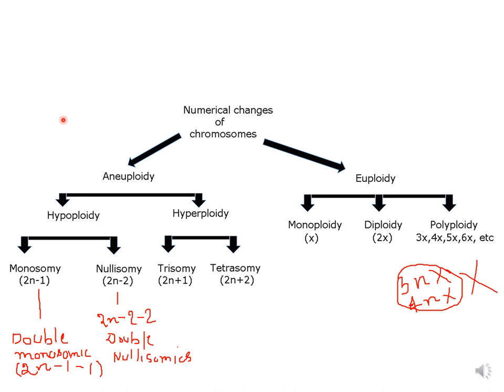The minus 1 minus 1 represents double monosomics, where the two missing chromosomes belong to two non-homologous sets. And 2n minus 2 minus 2 represents double nullisomics, where the minus 2 minus 2 condition means that two homologous pairs are missing but they are non-homologous with each other. Hyperploidy is when the number of chromosomes is more than the diploid counterparts, represented as 2n plus 1 — where plus 1 represents one extra chromosome — and tetrasomy is 2n plus 2, where plus 2 represents one extra homologous pair.